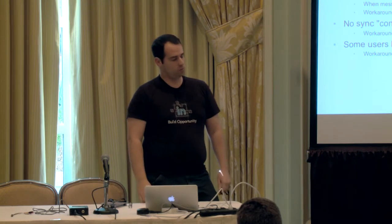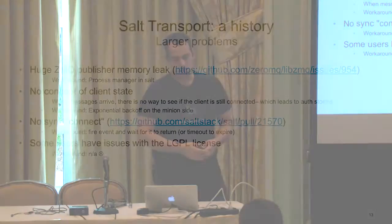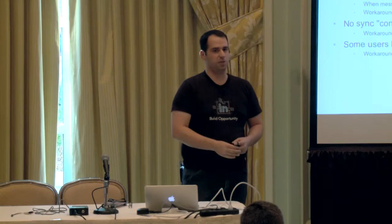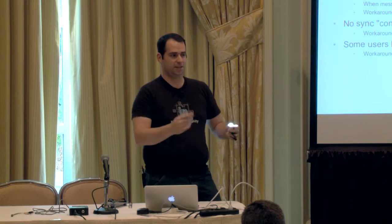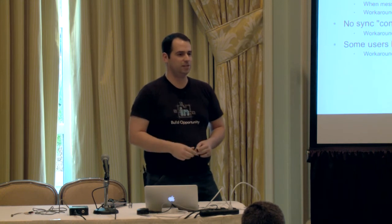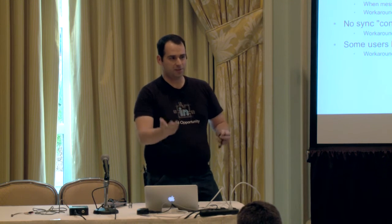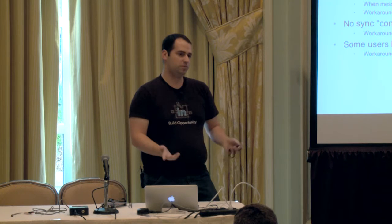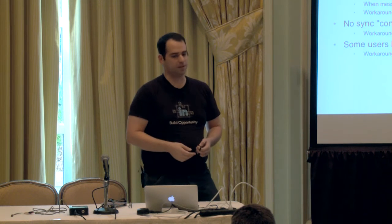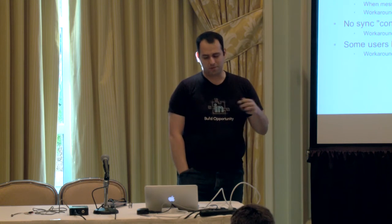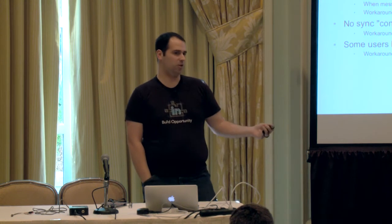Once we got past that, we started running into weirder problems. We found a huge memory leak in 0MQ in the publisher. Basically, if you connect on TCP to a publisher socket and disconnect, you cause that publisher socket to leak 600 bytes. It's been open for years and 0MQ doesn't want to fix it. We worked around it in Salt by having a process manager that kills and restarts it when it runs out of memory.